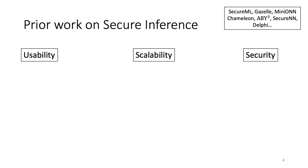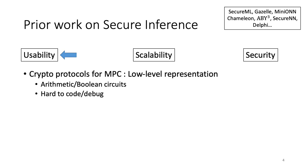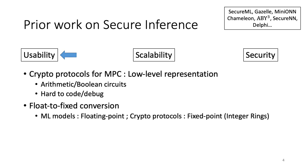In terms of usability, the crypto protocols used for MPC work with low-level representations of the function they are computing, usually in the form of arithmetic or boolean circuits, making it hard to code or debug large applications. The other main usability issue is float-to-fixed-point conversion. ML models work with floating-point arithmetic while crypto protocols have better efficiency over integer rings. Prior works have resorted to a manual conversion process, which quickly becomes intractable for large benchmarks and must be repeated for every new benchmark.